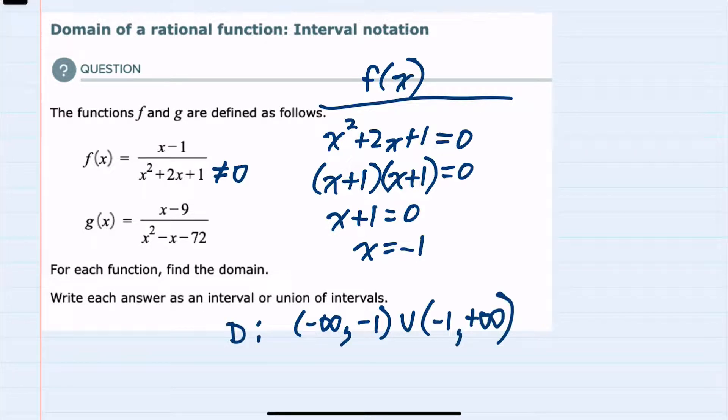In g of x, we have the same thing here with the fraction. So again, we don't want the denominator to be equal to zero. And to find which numbers to exclude, I'll take that denominator, x squared minus x minus 72, and set that equal to zero.